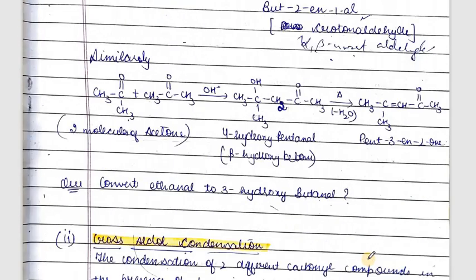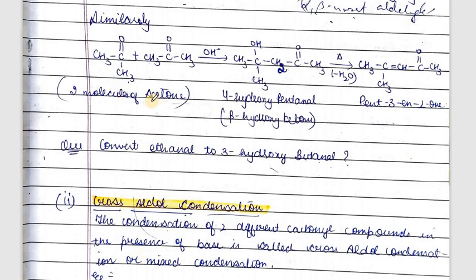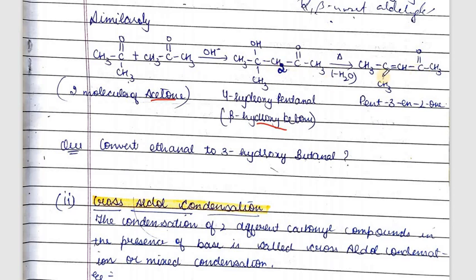Similarly, if two molecules of acetone condense in alkaline medium, we get beta hydroxy ketone. When heated, it undergoes dehydration to give an alpha-beta unsaturated ketone. This product has five carbons, with a double bond at the third position and a carbonyl group at the second position, so it is pent-3-en-2-one. Two molecules of acetone condense in alkaline medium to give beta hydroxy ketone, which then dehydrates to give alpha-beta unsaturated ketone.